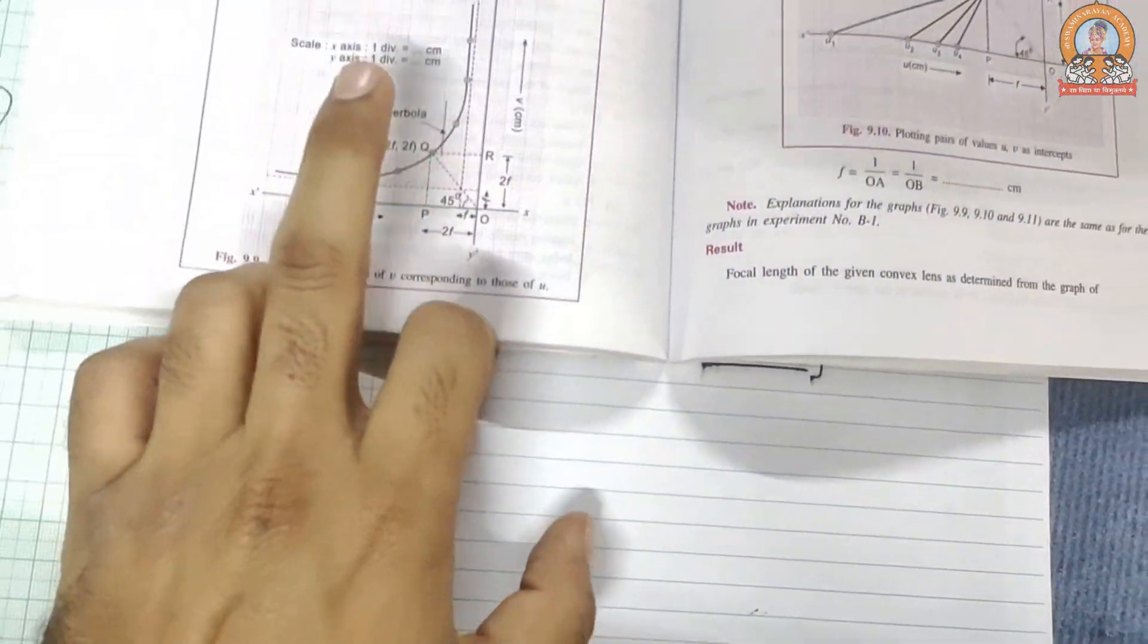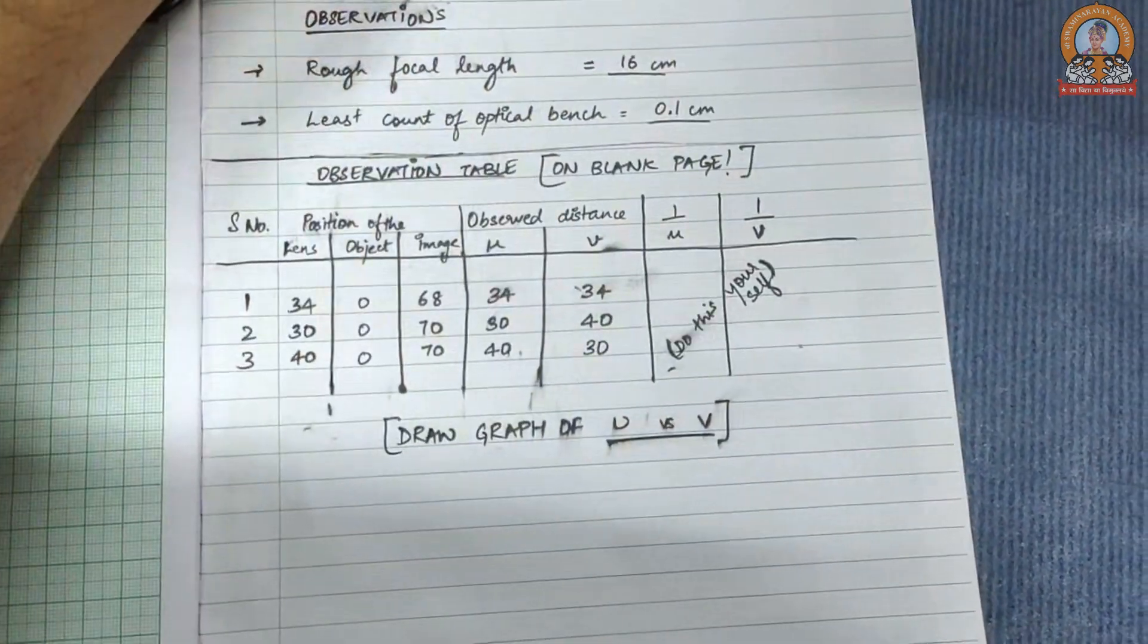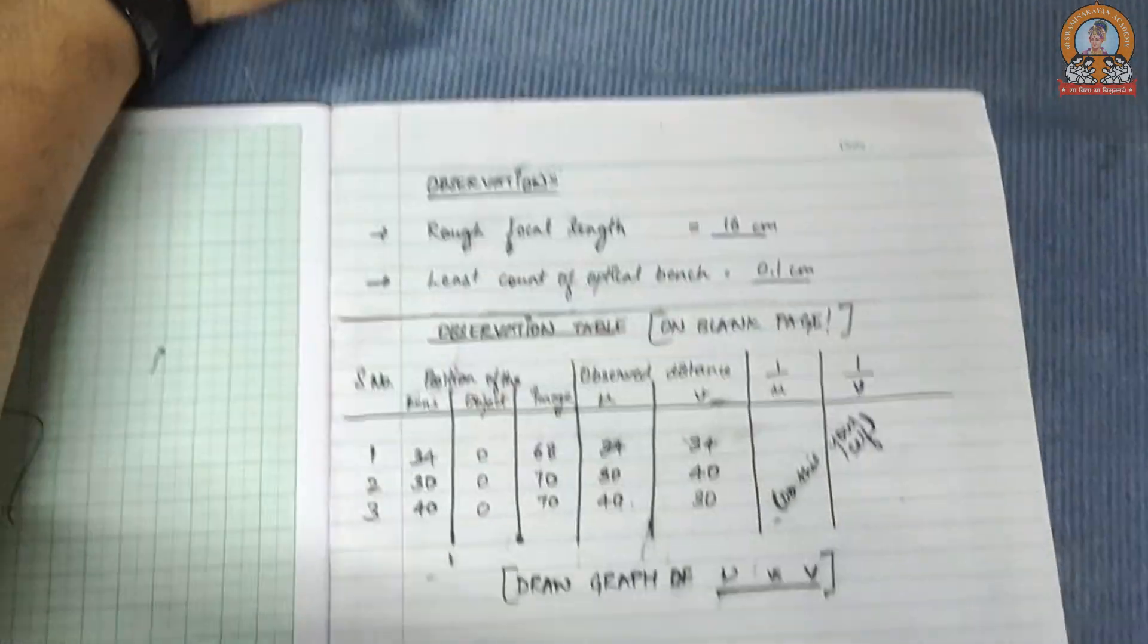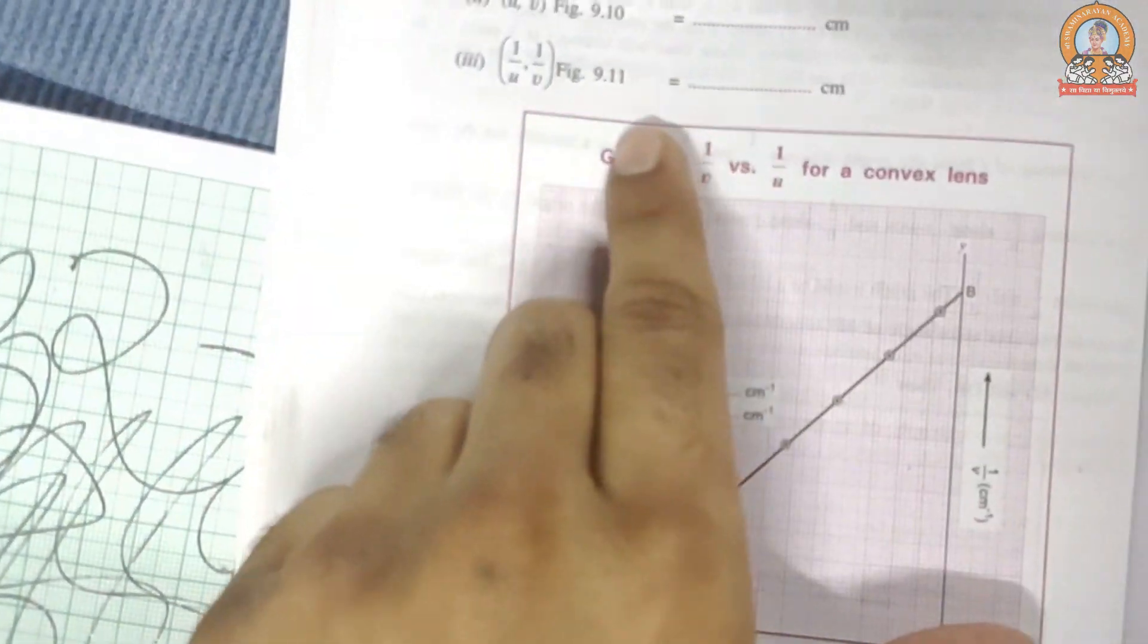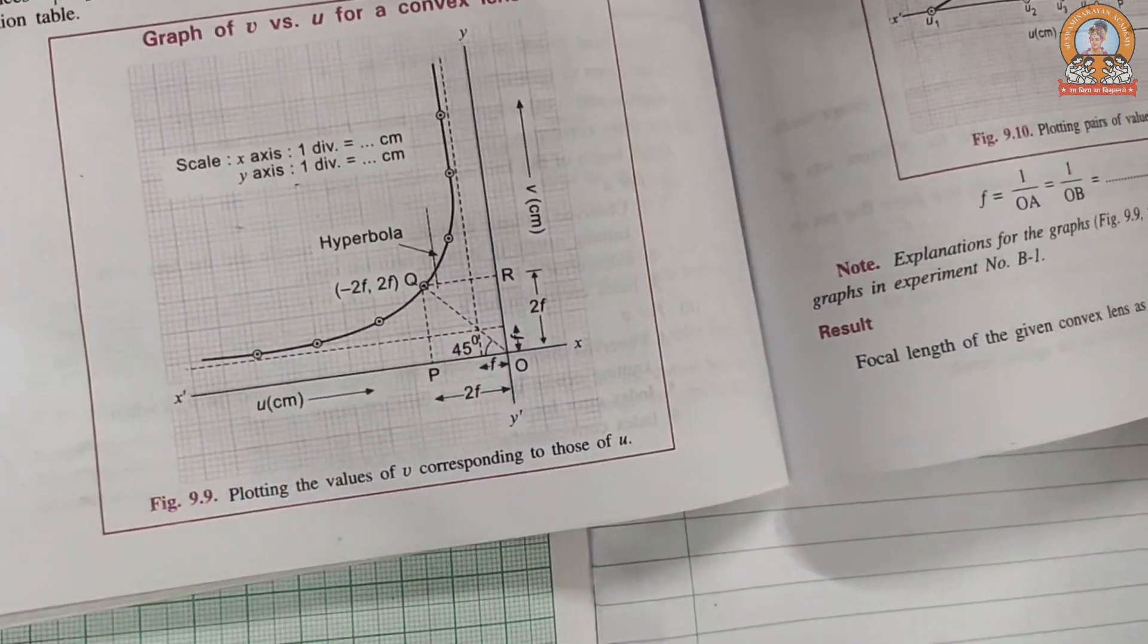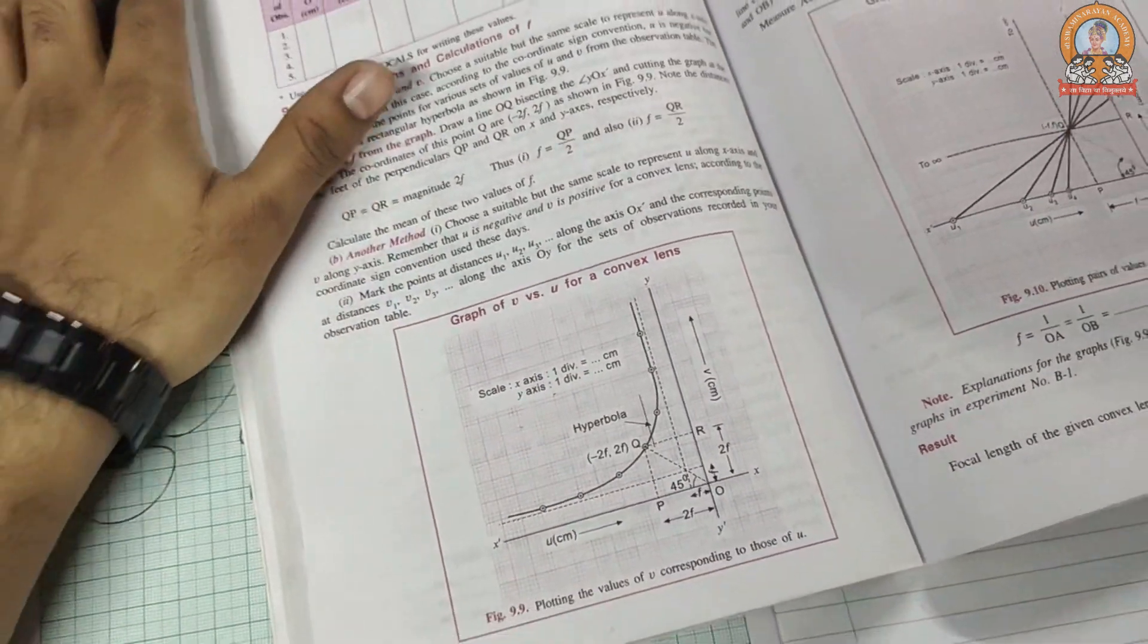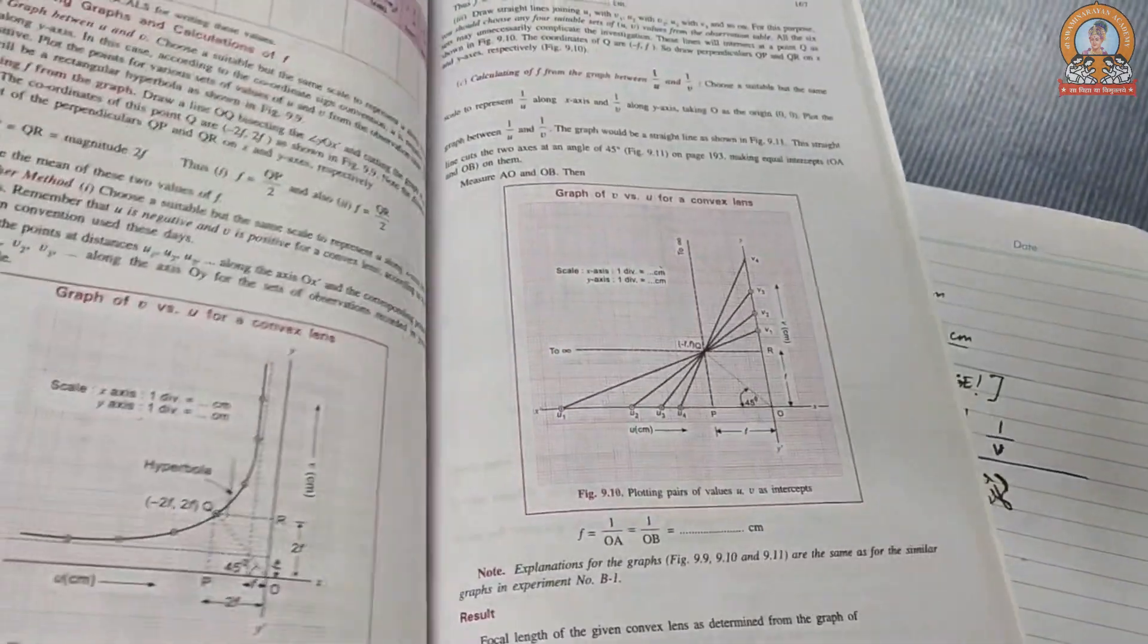This one, 1 over u and v, with our own readings. Plus this will be your observation table. Do not include corrected distance, we don't need that. And yes, in result you have to write this. Just keep one thing in mind that in graph, u will be negative in each and every case. And over here, if you follow the conventions, u will be negative. This experiment is over.